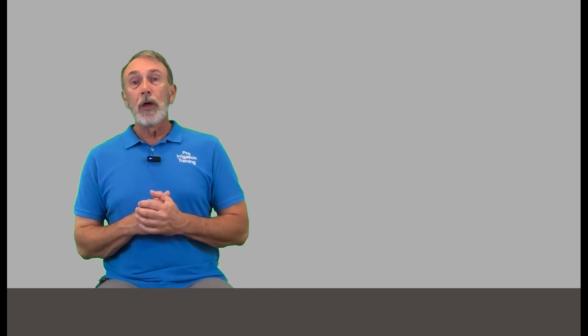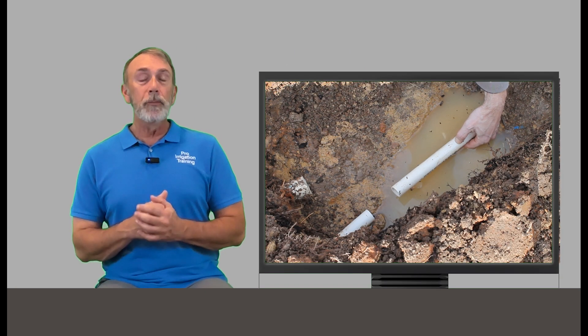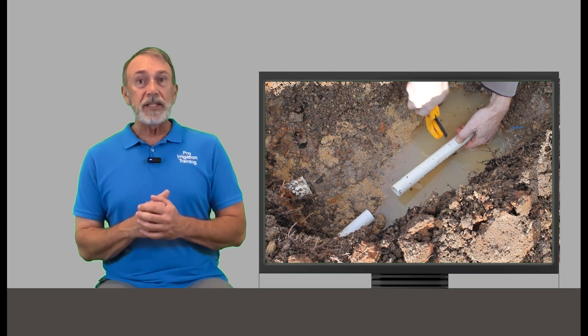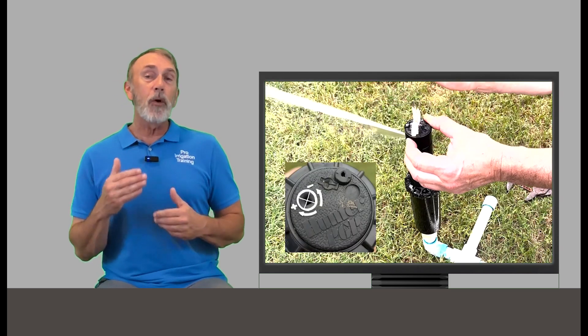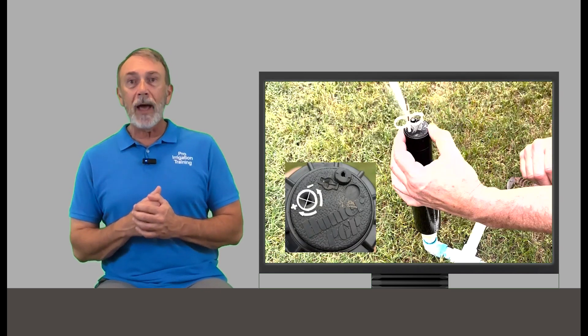And in the program, we have 37 skill builder exercises. These are the individual tasks that you're going to need to know well when you go out and start doing the business, when you go out into the field and start repairing irrigation systems.